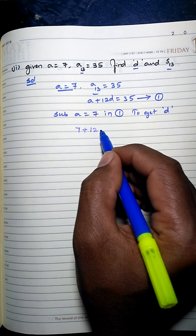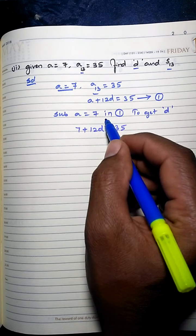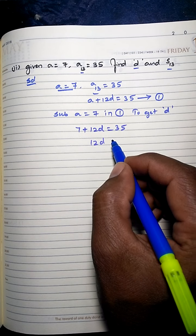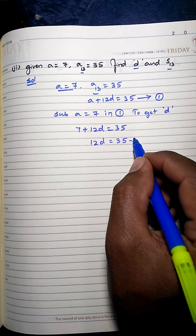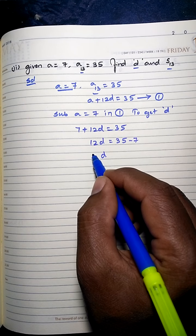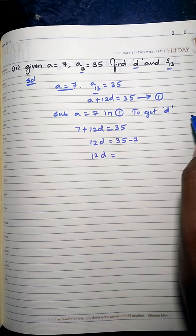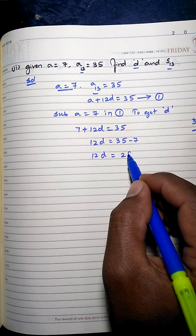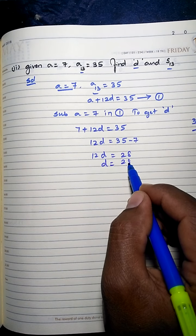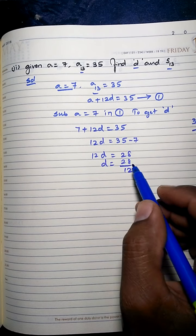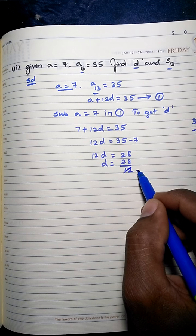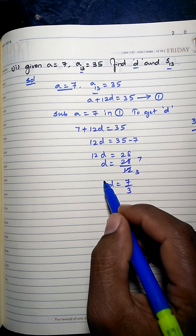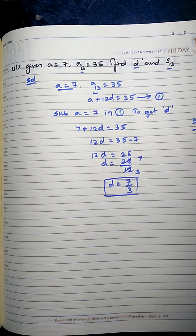Substituting a = 7 in equation (1): 7 + 12d = 35. Taking 7 to the other side: 12d = 35 − 7 = 28. So d = 28/12. Simplifying by cancelling — dividing both by 4 — we get d = 7/3.